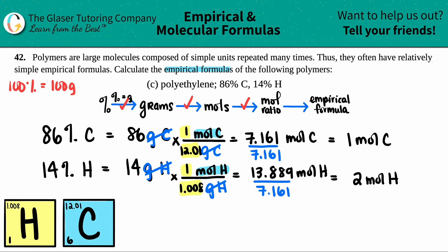I'm ready to get my empirical formula. The empirical formula is just taking the whole numbers you found and putting them together. I have carbon with 1 — you don't have to write the 1 — and hydrogen with 2, so I put that subscript down. That is my empirical formula: CH₂. With a one and a two subscript, you can't simplify that anymore. That's the final answer.